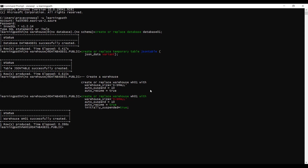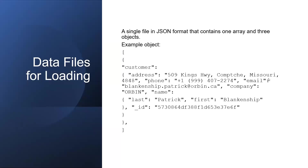Now I will show you what kind of data we are loading into the Snowflake table — here is a sample JSON file. This file exists in Amazon S3 and we are loading it using COPY INTO the Snowflake table. We can see fields like customer, address, customer email, and company name. We will load all this data into the JSON table.